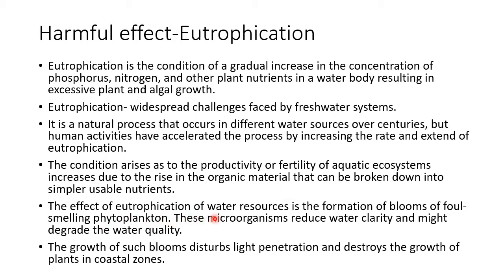The effect of eutrophication on water sources is the formation of blooms. Small algae and phytoplanktons, which normally dwell in water systems, start growing at higher rates, covering the entire surface of the water body. These blooms of foul-smelling phytoplanktons reduce water clarity and may degrade water quality. Their growth disturbs light penetration and destroys plant growth in coastal zones as well.